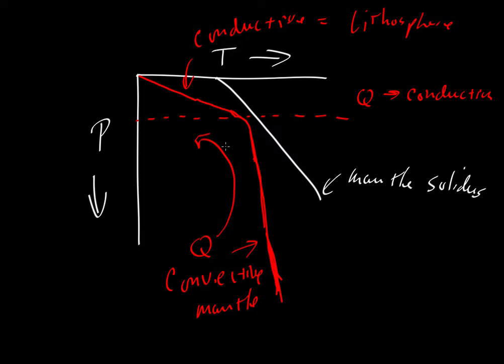These convective currents can rise up, but they hit the solid lid, and these convective currents then turn around and sink back downwards as they release their heat into the lithosphere. But the lithosphere here is strong enough and rigid enough that it is not taking part in this convective mantle flow.